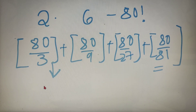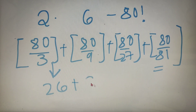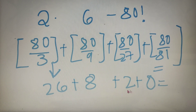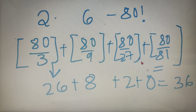We calculate ⌊80/3⌋ + ⌊80/9⌋ + ⌊80/27⌋ + ⌊80/81⌋. We stop at 81 because 81 is greater than 80. The values are 26 + 8 + 2 + 0 = 36. So the highest power of 6 in 80 factorial is 6³⁶.